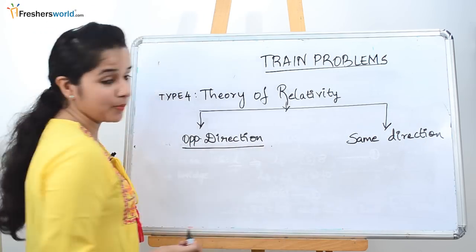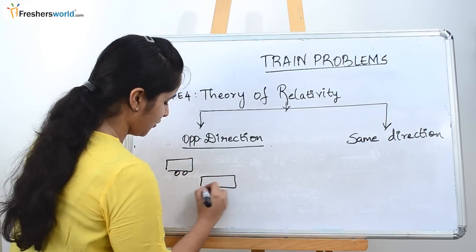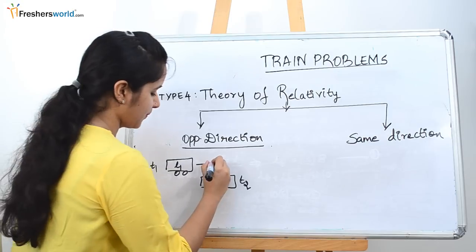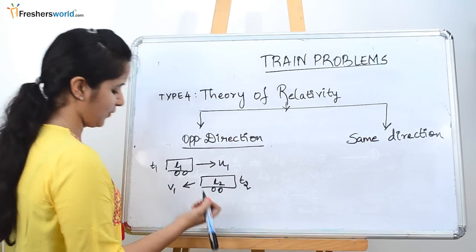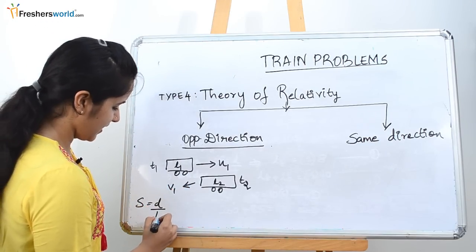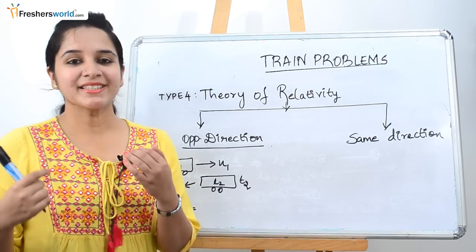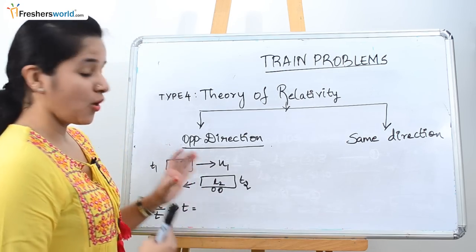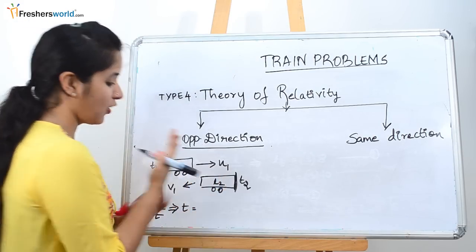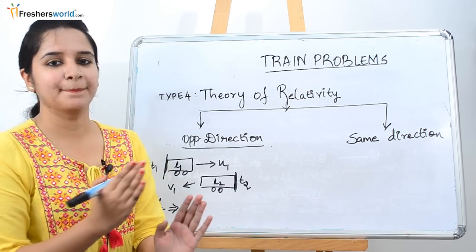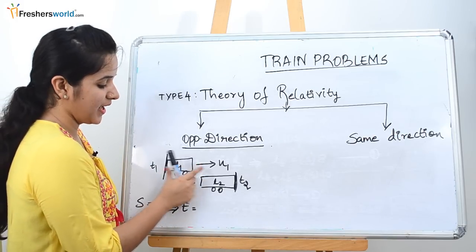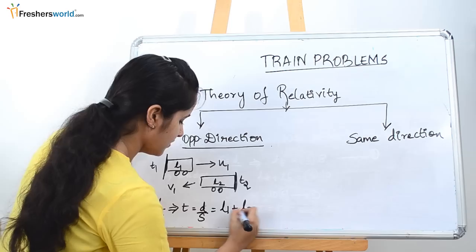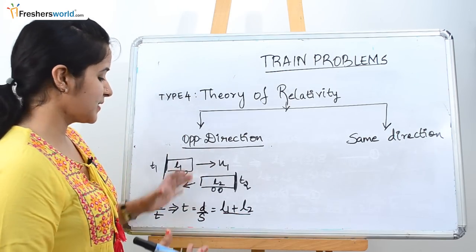Let's explain for the opposite direction. Let's say this is Train 1 and this is Train 2. Let the length of Train 1 be L1 and length of Train 2 be L2. This is moving at speed u1 and this is moving at speed v1. We know the formula: speed equals distance by time. So what is the time taken for two trains moving in opposite direction to cross each other completely? When the front of each train passes the end of the other, that's when we say they have crossed completely. So it has to cover L1 plus L2 as the distance, and the speed is u1 plus v1.